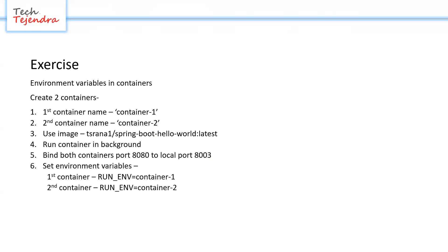The exercise is about environment variables in containers. We have to create two containers — the first container's name should be container one, and the second container's name should be container two. We should use this image from Docker Hub. Our containers should run in the background, and both should be bound to port 8080 mapped to local port 8003. We also have to set environment variables for each container.